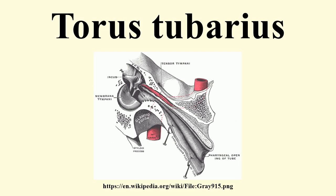The base of the cartilaginous portion of the Eustachian tube lies directly under the mucous membrane of the nasal part of the pharynx, where it forms an elevation — the torus tubarius, the torus of the auditory tube, or cushion — behind the pharyngeal orifice of the tube.